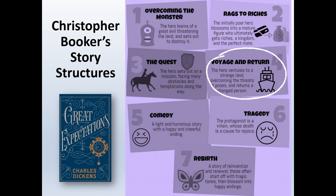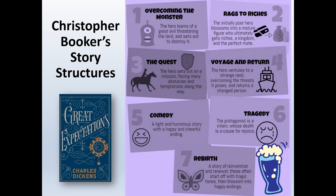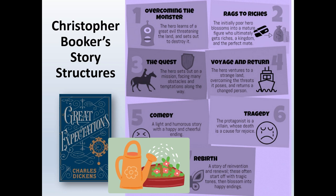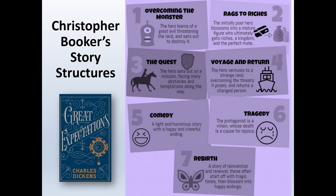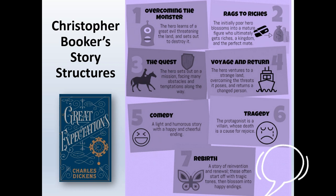I argue Great Expectations fits better into voyage and return because Pip, due to his inherited wealth, ventures into a strange land — he literally moves to London — and is surrounded by many new characters, temptations, and threats posed by the life and inhabitants of London. He is changed by those experiences and then returns to his original location, very much transformed by the events that happened to him. Feel free to comment below if you disagree.